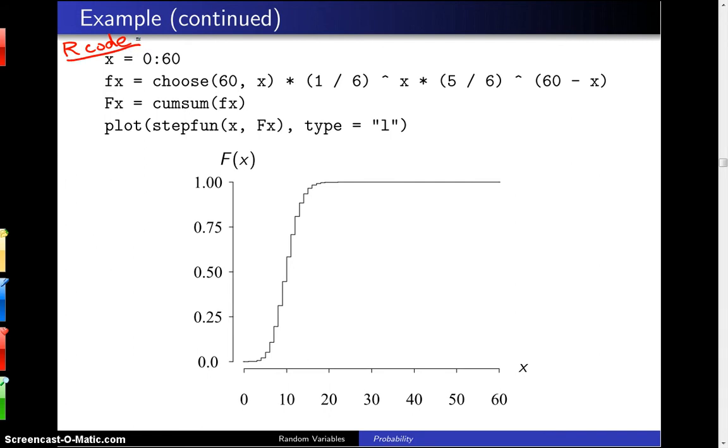The first line, x, gets set to the vector 0 to 60, so that includes all the support values 0, 1, 2, 3, all the way up to 60. Little f of x is going to be 60 choose x, one-sixth to the x, five-sixths to the 60 minus x. Capital F of x will be the cumulative sum of little f of x.